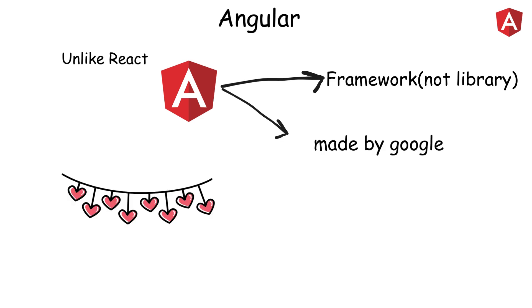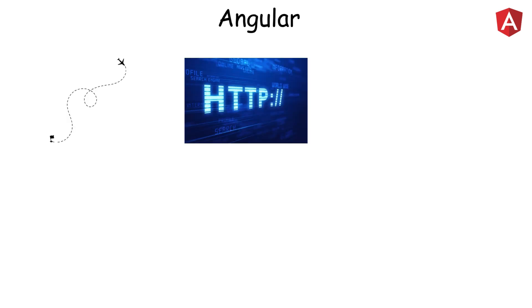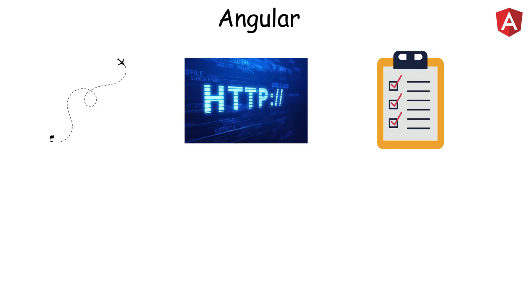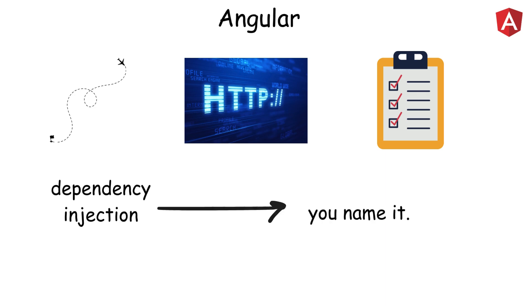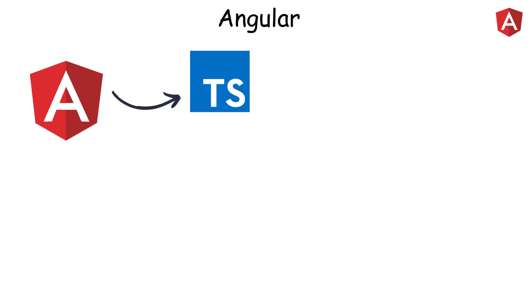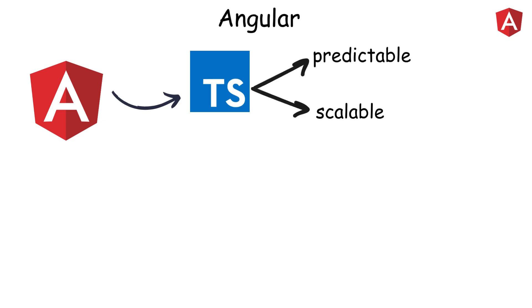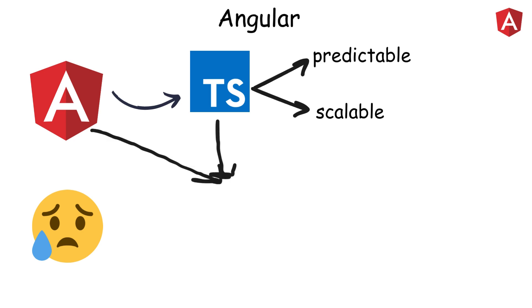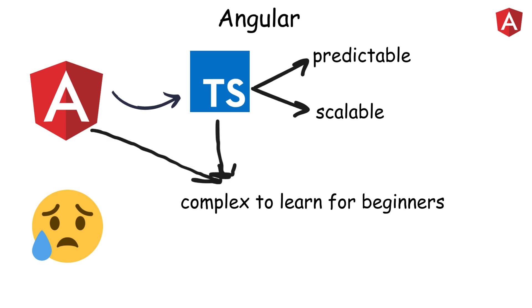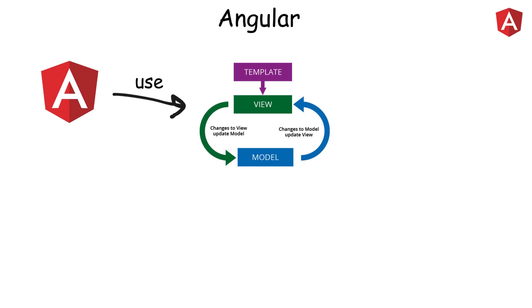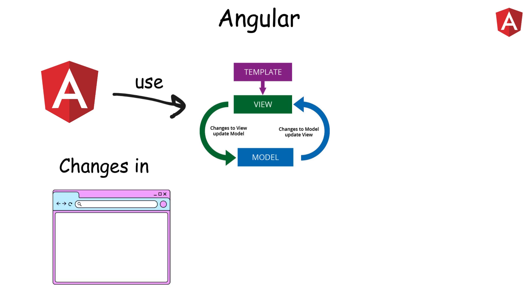Angular includes routing, HTTP services, form handling, and dependency injection — you name it. It's written in TypeScript, which makes your code more predictable and scalable, but also more complex to learn for beginners. Angular uses something called two-way data binding, which means changes in your UI instantly reflect in your code and vice versa.